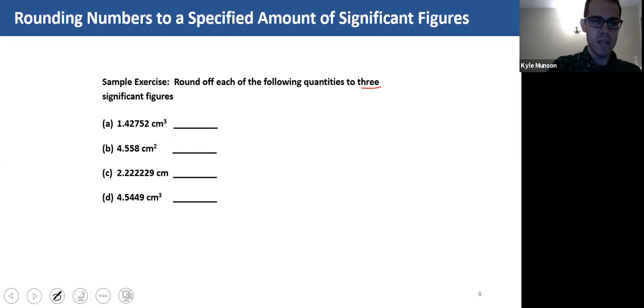Round each of the following quantities to three significant figures. Going through these a little faster now, this is 1.43 centimeters cubed. Because again, that seven, the first digit to be dropped, was greater than five, so we round the two up to a three.